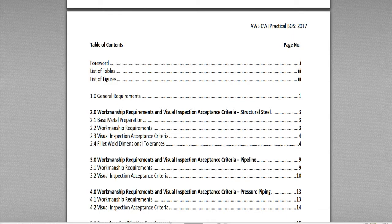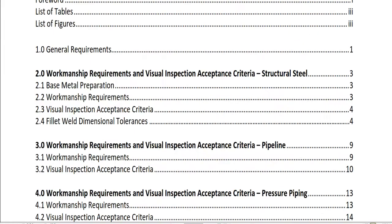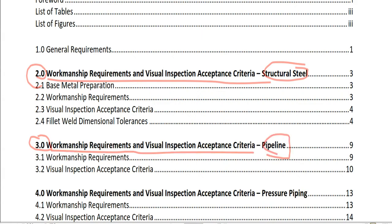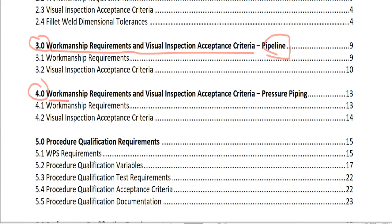When you look at the table of contents, you can see the first chapter is General Requirements — only about two pages. Chapter two is Workmanship Requirements and Visual Inspection Acceptance Criteria for Structural Steel Application. Chapter three is the same for Pipeline Application, and chapter four is for Pressure Piping.